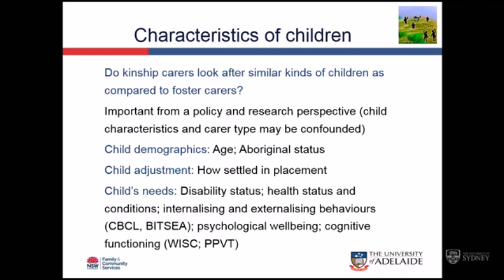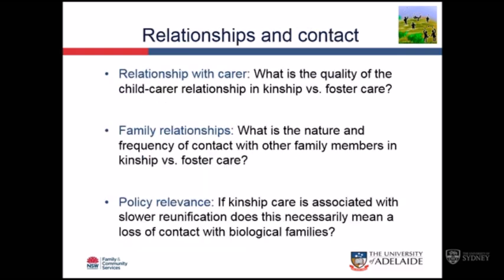Looking at characteristics of children, we have demographics and lots of standardised outcome measures, including the child behaviour checklist, which gives a sense of what their behaviour is like - whether they're showing signs of depression or anxiety. We also looked at relationship variables - the quality of relationships between all different parties in the care system, and the nature and frequency of contact with family members. If kinship care is associated with slower reunification, one hypothesis is that they're losing contact with their families, so we can test that idea.